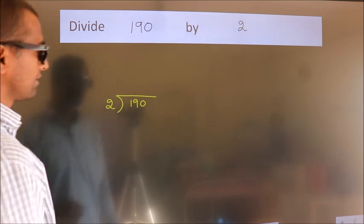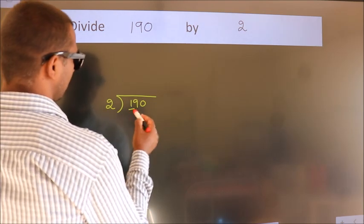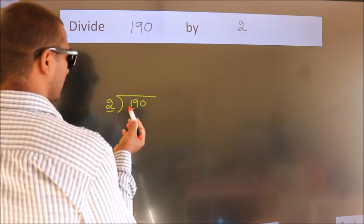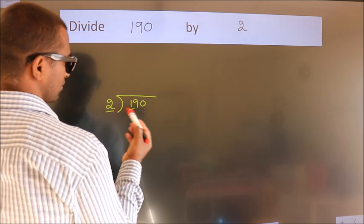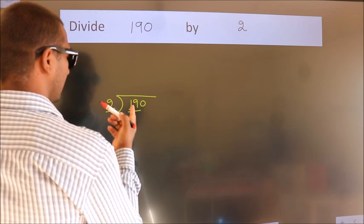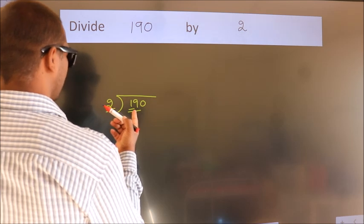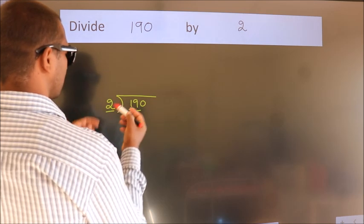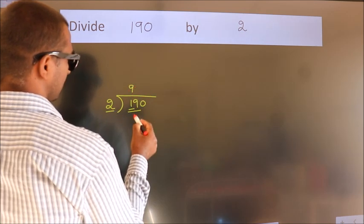Next. Here we have 1, here 2. 1 smaller than 2, so we should take 2 numbers: 19. A number close to 19 in the 2 table is 2 times 9 equals 18.